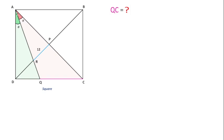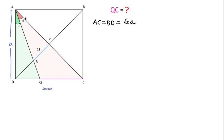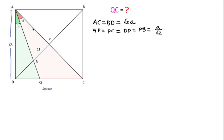To find QC, I will consider the side length of this square to be A units, so each side will be A. By this information, the diagonals AC and BD will each be equal to √2·A, because the diagonals of a square are equal and bisect each other. So we can write AP = PC and DP = PB = √2·A / 2 = A/√2. This means AP = A/√2 and DP = A/√2.